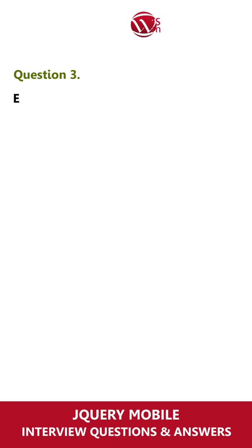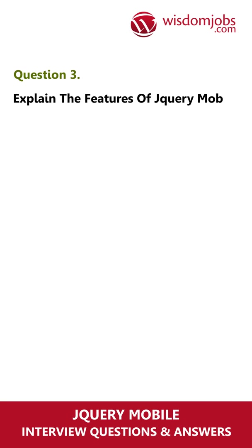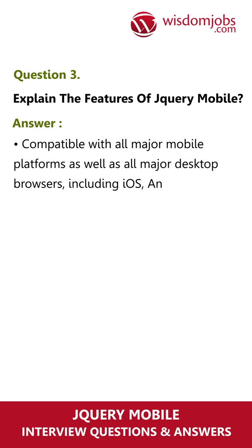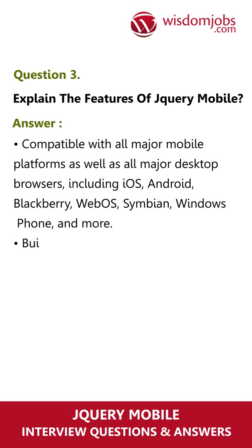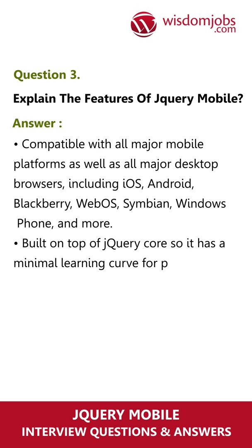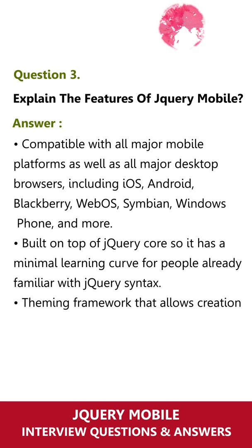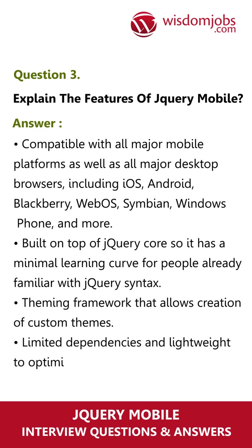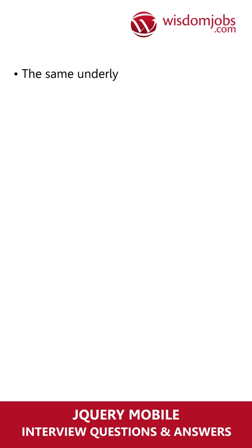Question 3. Explain the features of jQuery mobile. Compatible with all major mobile platforms as well as all major desktop browsers, including iOS, Android, Blackberry, WebOS, Symbian, Windows Phone, and more. Built on top of jQuery core, so it has a minimal learning curve for people already familiar with jQuery syntax. Theming framework that allows creation of custom themes. Limited dependencies and lightweight to optimize speed. The same underlying code base will automatically scale to any screen.